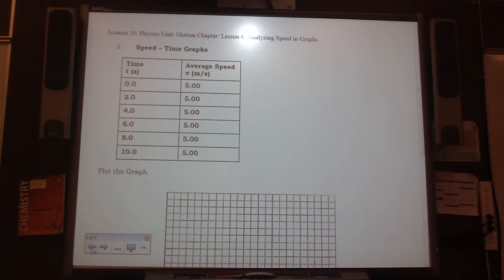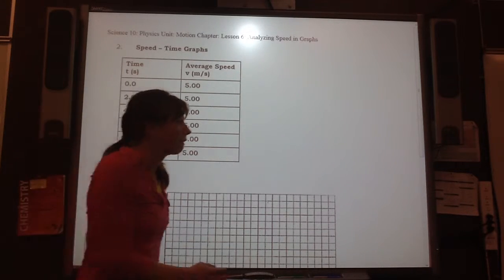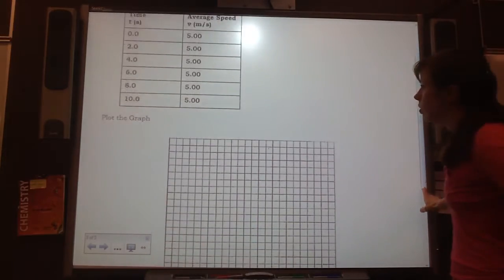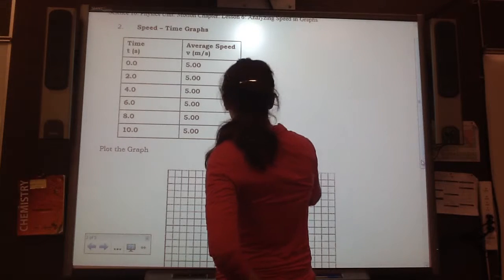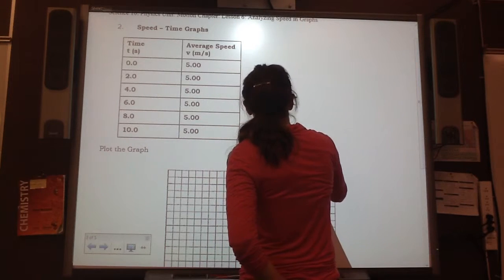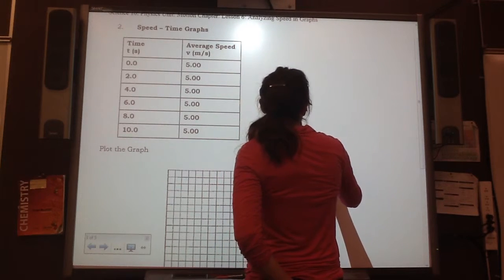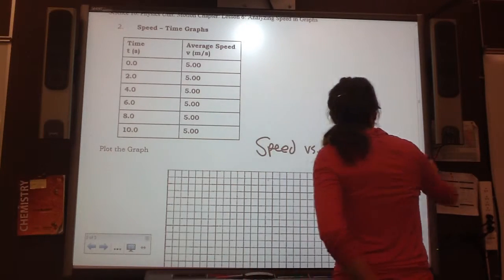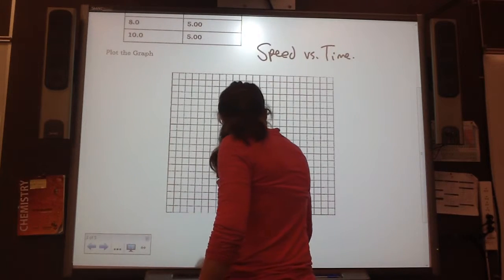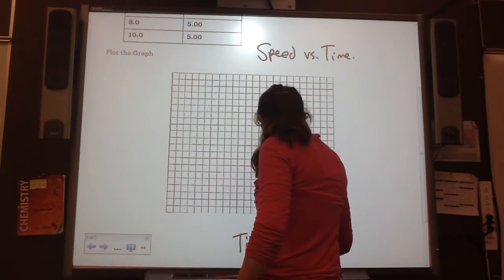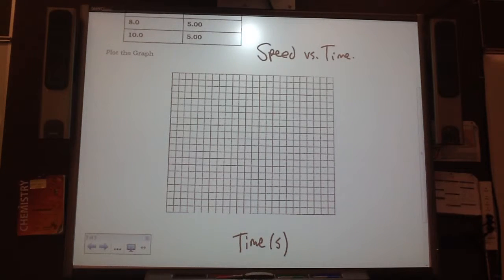This is the second type of graph that we can look at to learn about speed. So look here. This is a speed-time graph, and we have data here. So let's plot the data. We don't really know too much more about this graph, so we'll just call it a speed versus time. And we don't even know what object it is, so we'll just put speed versus time. Time always goes on the bottom, and speed goes on the side, on the Y axis.